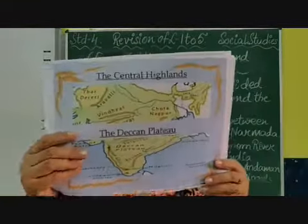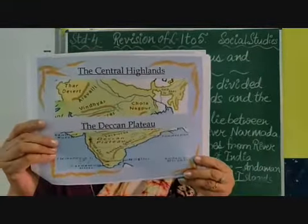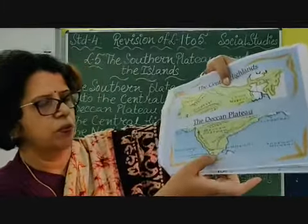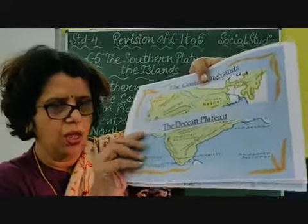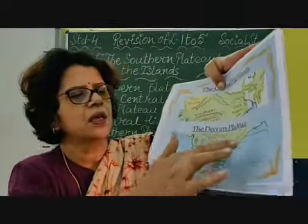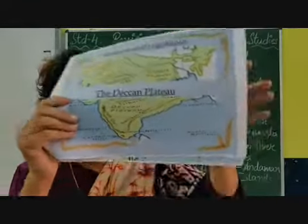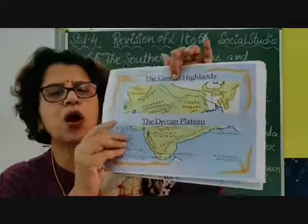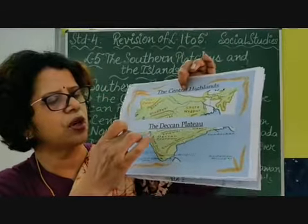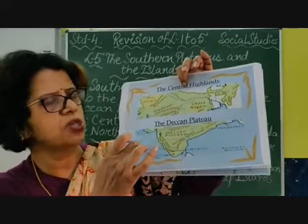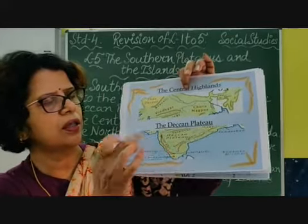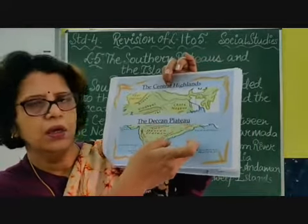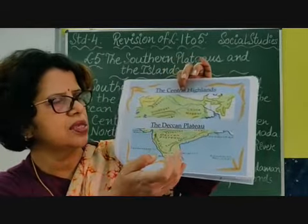The Deccan plateau extends from river Narmada to the southernmost tip of our peninsula. The two coastal plains actually meet at the two ghats. The western coastal plain lies between the Arabian Sea and the western ghats, and the eastern coastal plain lies between the Bay of Bengal and the eastern ghats.